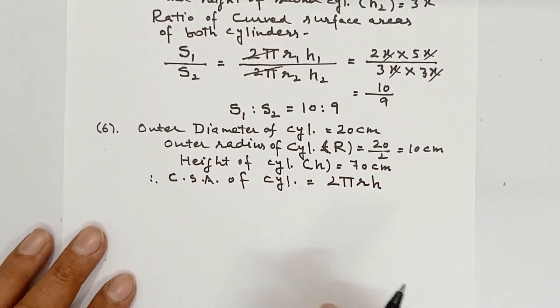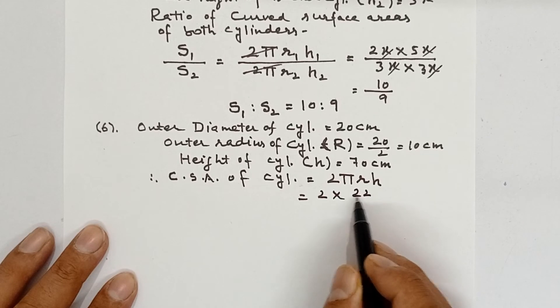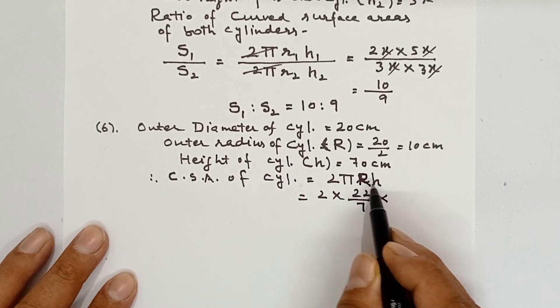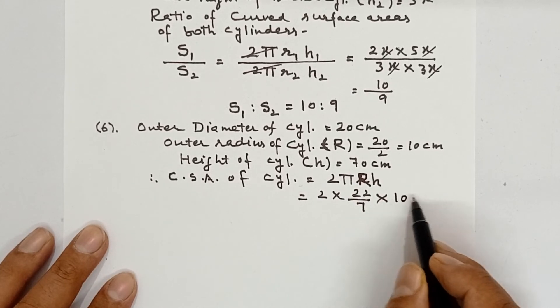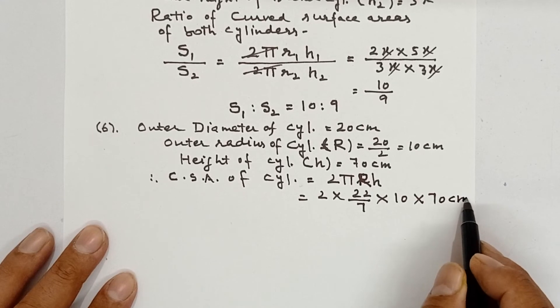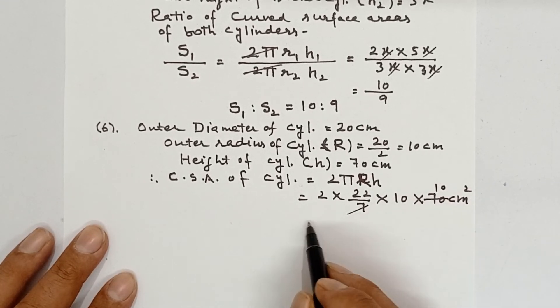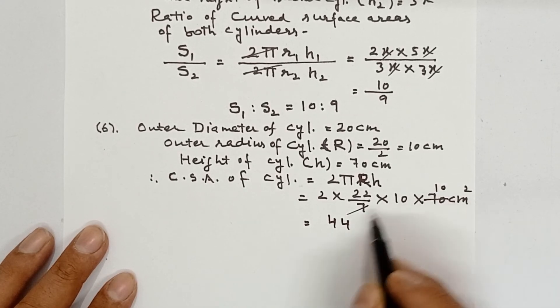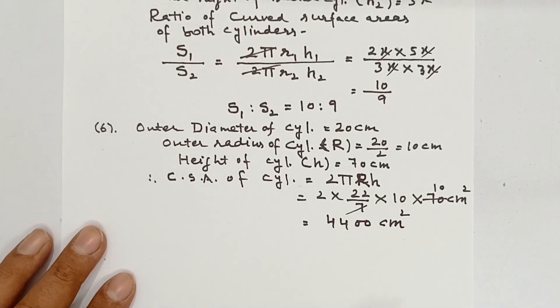Now substitute the values. 2 and π is 22/7, r is 10, and h is 70, unit will be cm square. 7 tens are 70, 20×2 is 44, and it will become 4400 cm square.